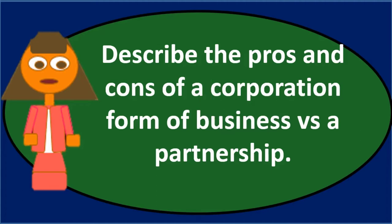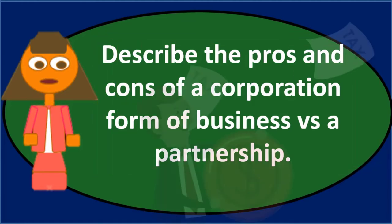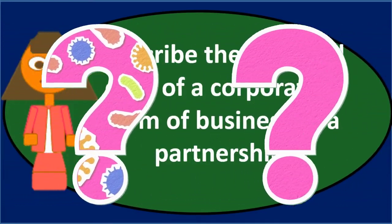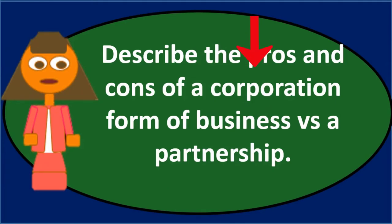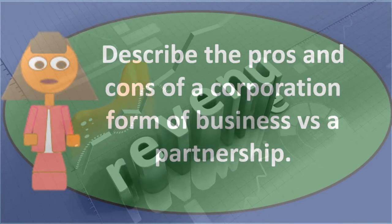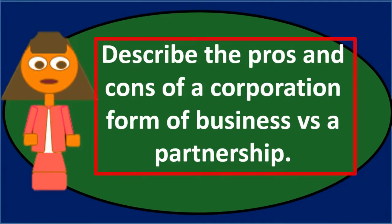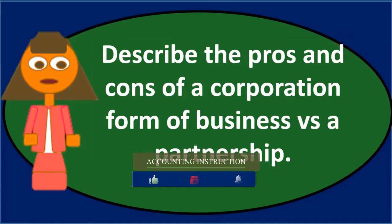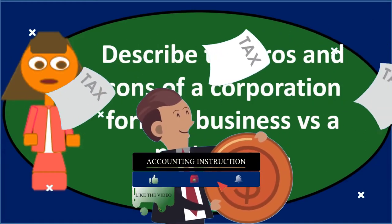One major problem with a corporation versus a partnership is that, as a separate legal entity, it owes taxes at the corporate level. This typically results in double taxation. The stockholders are the ultimate owners, so they bear the burden of taxes at both levels. In a partnership, draws are not taxed because the partnership's net income flows through to the partners' individual tax returns via a K-1 — only the net income itself is taxed.